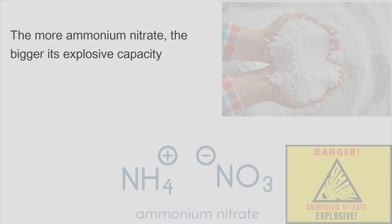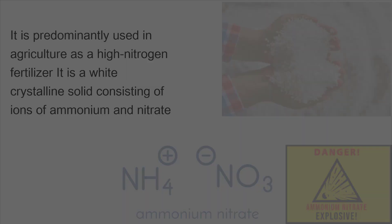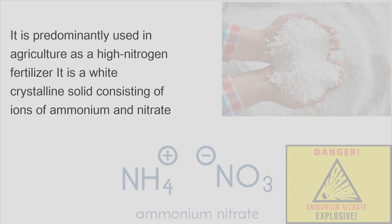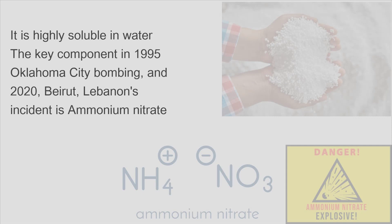The more ammonium nitrate, the bigger its explosive capacity. It is predominantly used in agriculture as a high-nitrogen fertilizer. It is a white crystalline solid consisting of ions of ammonium and nitrate. It is highly soluble in water. The key component in the 1995 Oklahoma City bombing and the 2020 Beirut, Lebanon incident is ammonium nitrate.